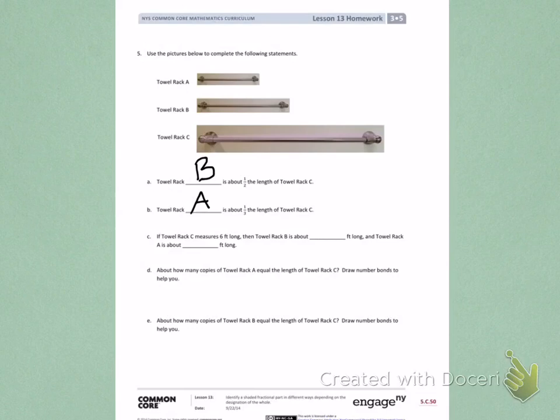Letter C. If towel rack C measures six feet long, then towel rack B is about blank feet long, and towel rack A is about blank feet long. So this is towel rack C, and it is six feet long. I know towel rack B is one half that length. So I need to think about six dividing it in half to find the length of towel rack B. You can do that on your own.